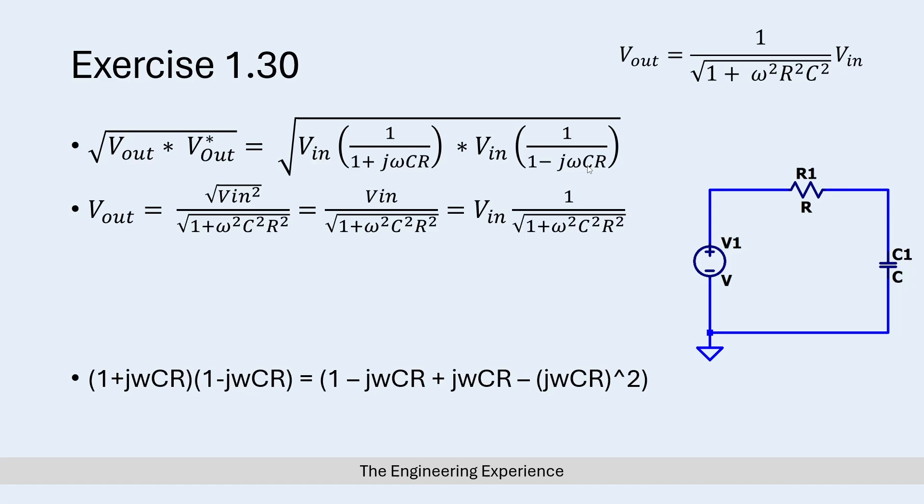The third bit would be jωCR multiplied by 1, so we get a +jωCR. And then the last bit would be -j²ω²C²R².